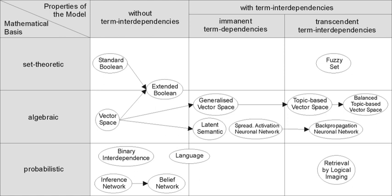In the early 1970s, the first online systems emerged: NLM's AIM-TWX, MEDLINE, Lockheed's Dialogue, and SDC's Orbit. Theodore Nelson promoted the concept of hypertext and published Computer Lib / Dream Machines. In 1971, Nicholas Jardine and Cornelis J. Van Rijsbergen published "The Use of Hierarchic Clustering in Information Retrieval," which articulated the "cluster hypothesis."